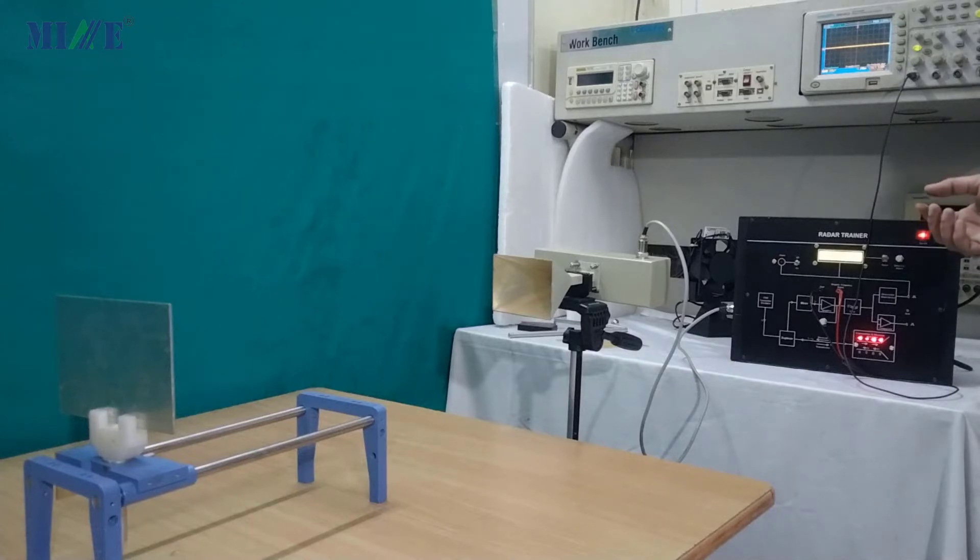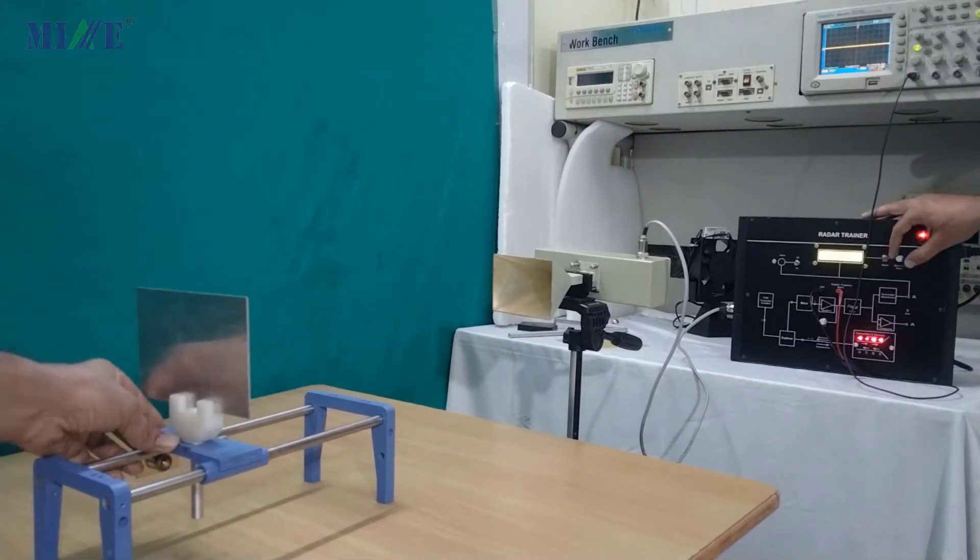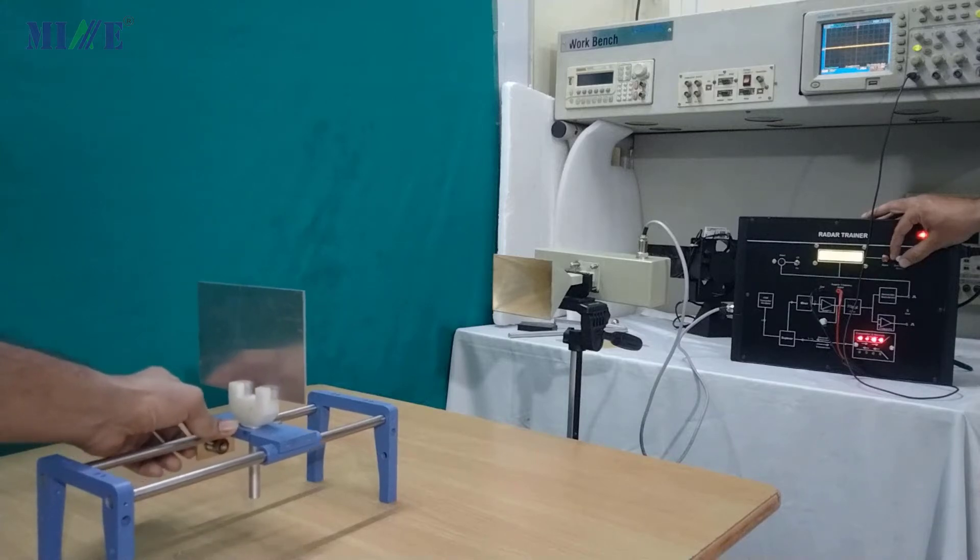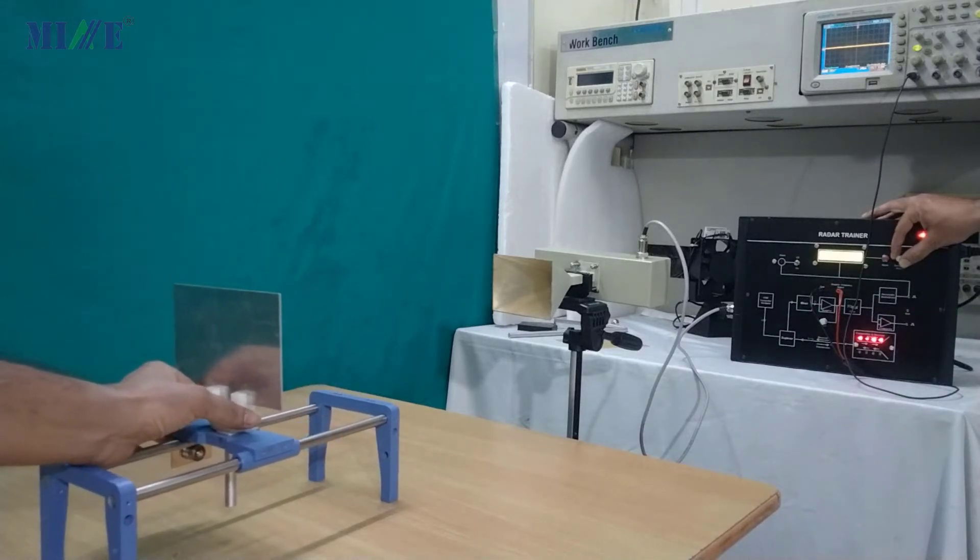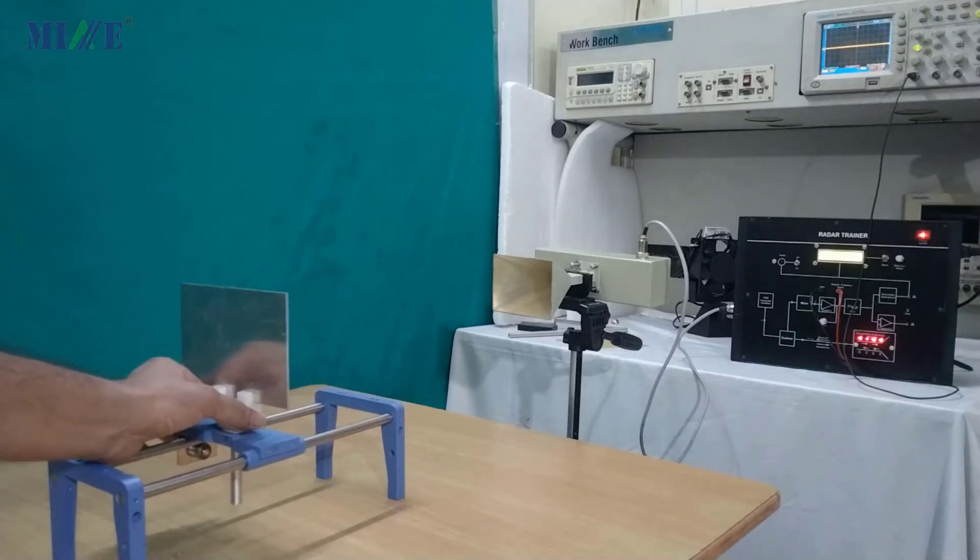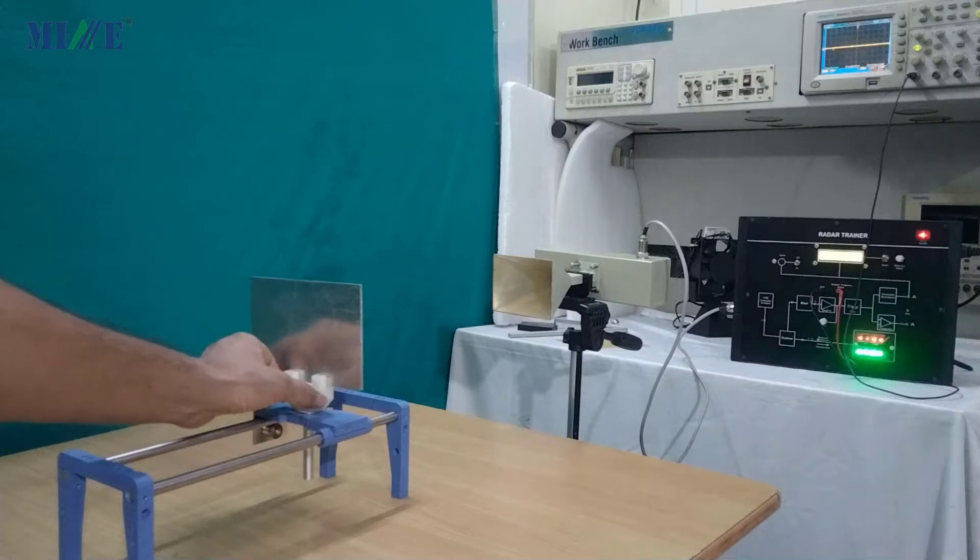For getting sufficient reception we will adjust detection adjust slowly and keep object in moving condition while adjusting detection adjust knob. Here you can see that we are receiving good amount of signal from radar.